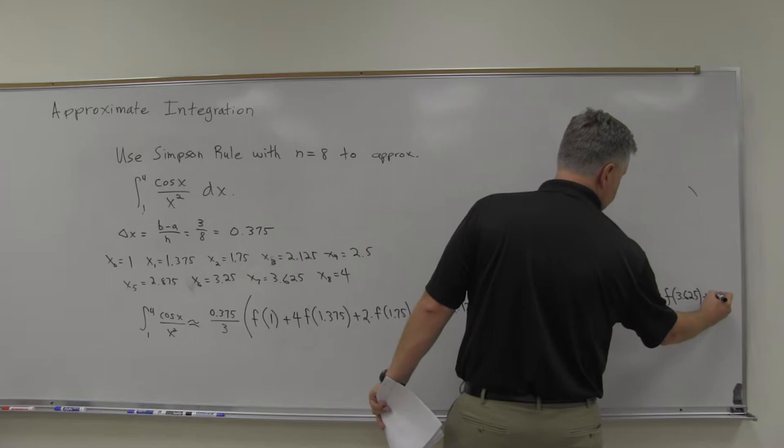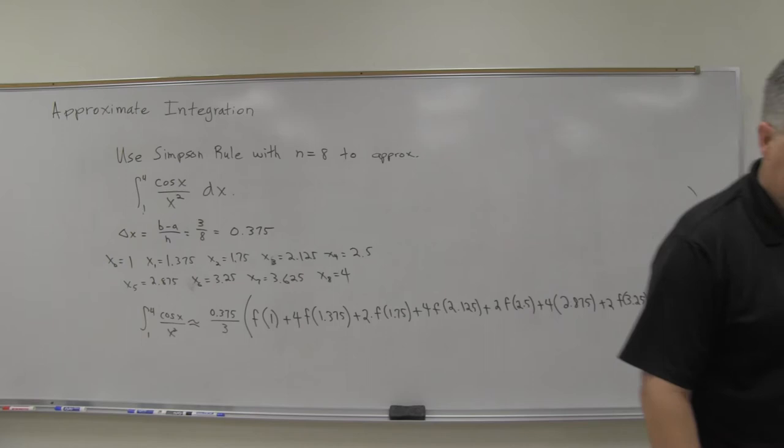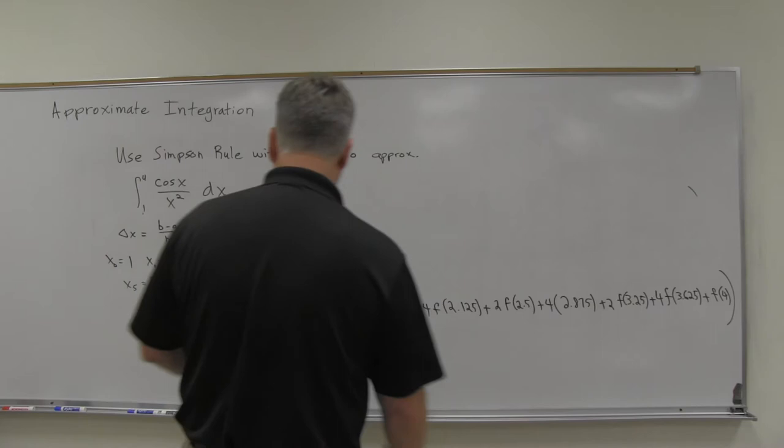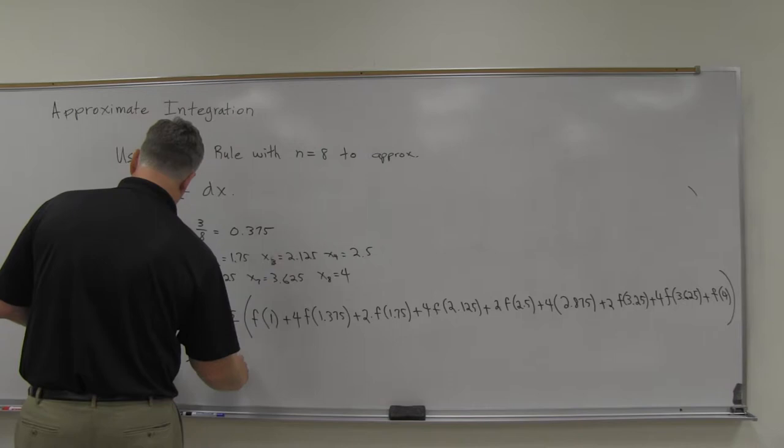And then f of x8, just one of those. It's just a little matter of putting all that in — if you use a calculator it works pretty well, just plug it in. I get all that to be approximately negative 0.106321 — they want it to about 5 or 6 decimal places when you do all that out.